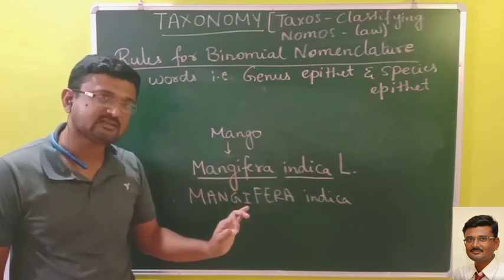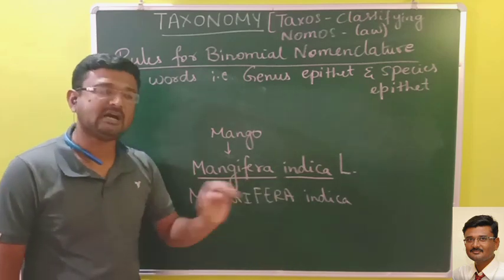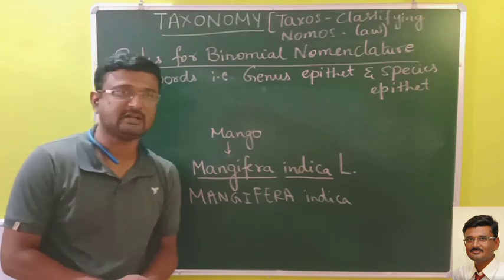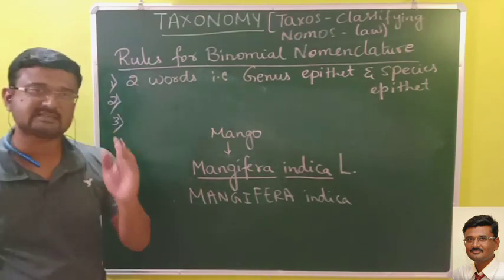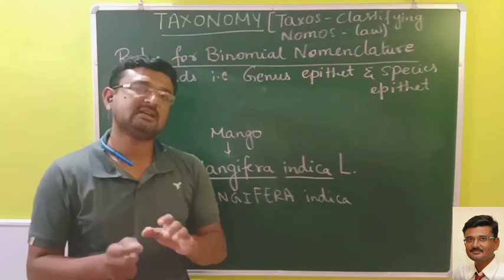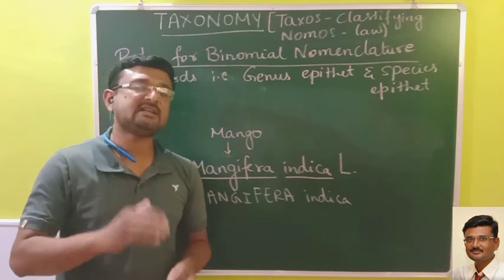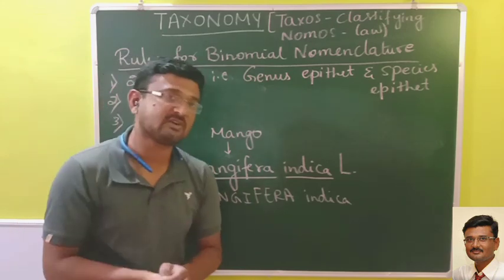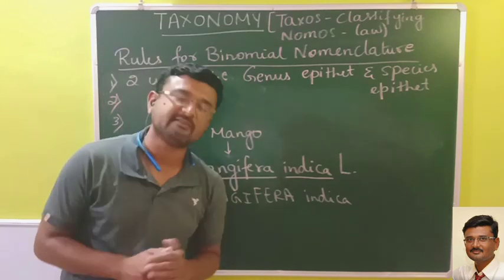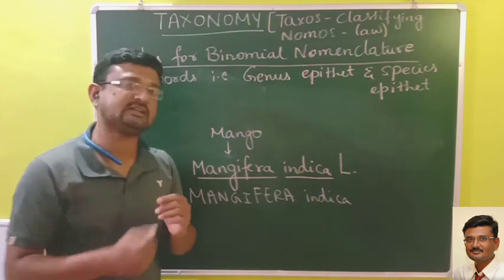The third rule says that the genus name and species name, when handwritten, should be underlined. When you write scientific names — botanical or zoological — anywhere, you have to underline them. If it is in printed form, it should be in italics. The fourth rule says that the scientific name should be in Latin language, because Latin is the oldest language and no one currently uses it, so there will be no changes in words or meanings.